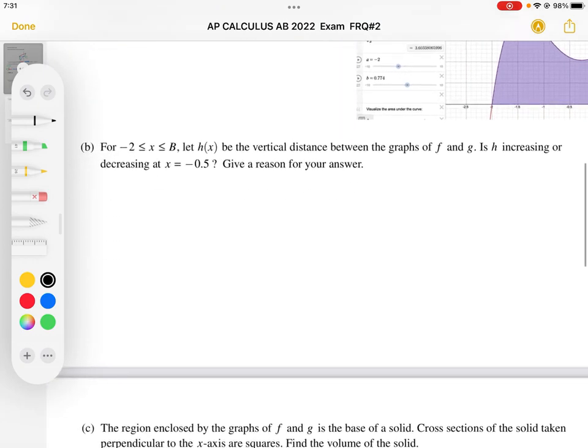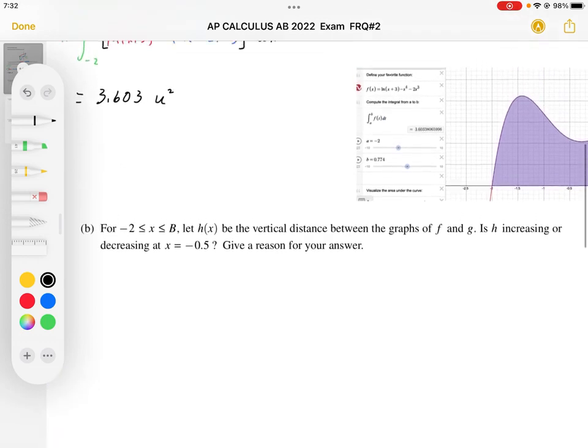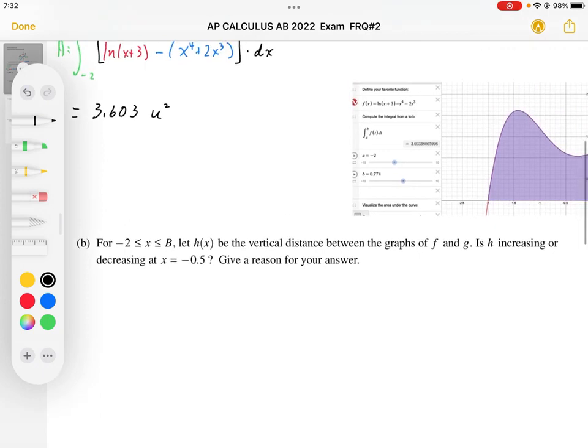For B, it says for negative 2 to B, let H be the vertical distance between the graphs of F and G. Is H increasing or decreasing at X equals negative 0.5?